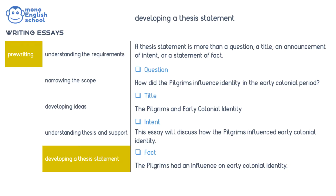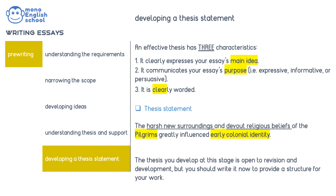For example, your question could be: 'How did the Pilgrims influence identity in the early colonial period?' A title might be: 'The Pilgrims and Early Colonial Identity.' A statement of intent would be: 'The essay will discuss how the Pilgrims influenced early colonial identity.' And a fact would be: 'The Pilgrims had an influence on early colonial identity.' An effective thesis statement has three important characteristics: number one, it clearly expresses your essay's main idea; number two, it communicates the essay's purpose; and number three, it is clearly worded.